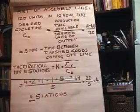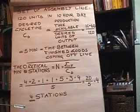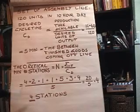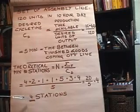So 20 over five gives us four. So theoretically that's the minimum number of workstations we would need to get our desired cycle time so that we could produce 120 units in a day. So four stations is the best that we could hope for.